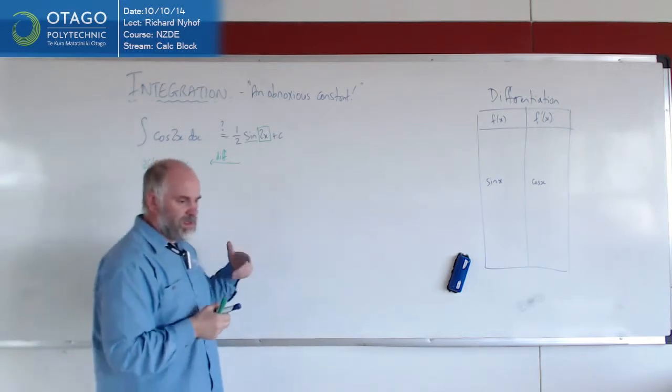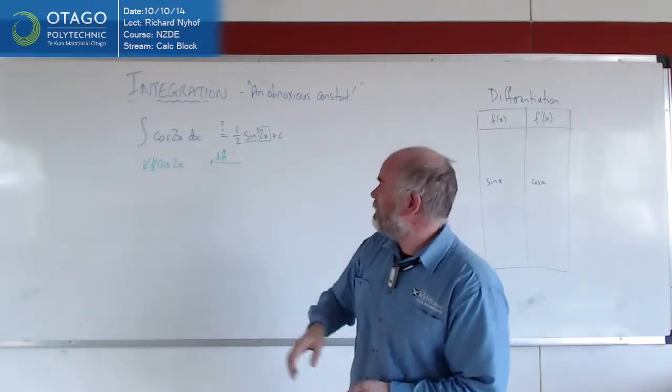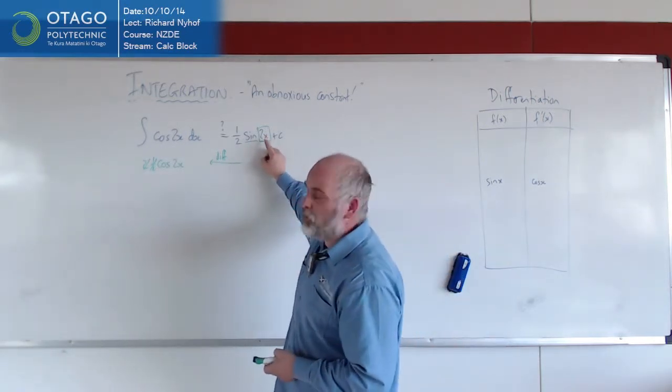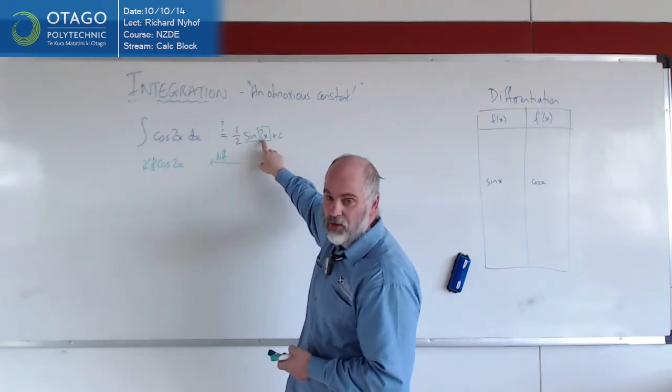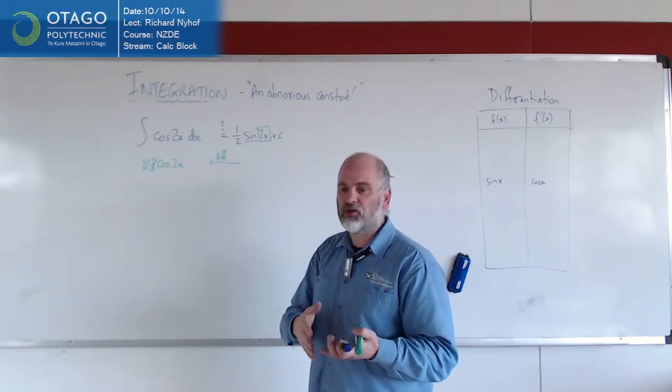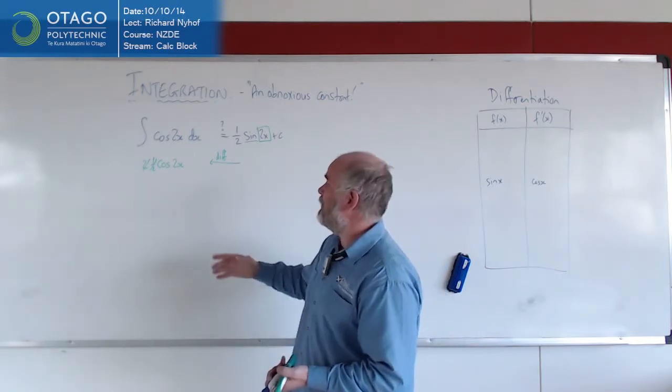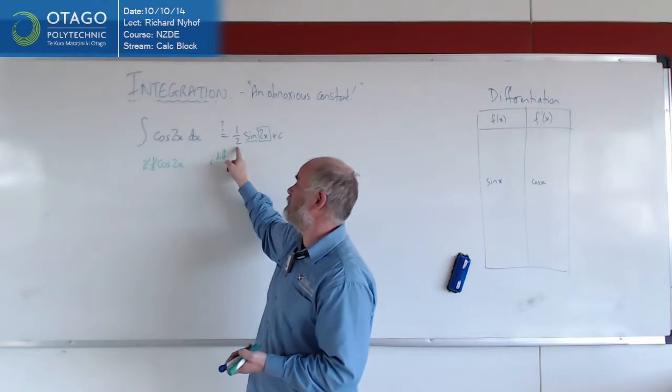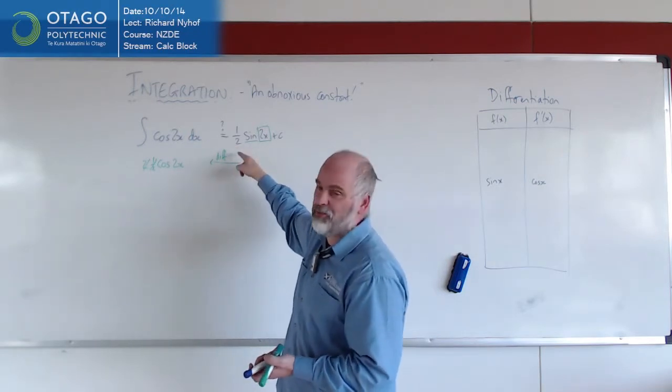So when we differentiate something like this, the chain rule means that we get an extra 2 coming through. So we end up multiplying by 2. And given that integration is going to be the opposite of that, we have to effectively divide by 2 so that we can deal with the times by 2 when we come back.